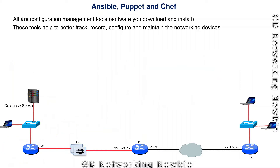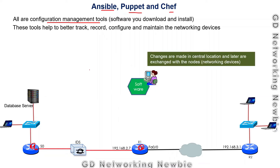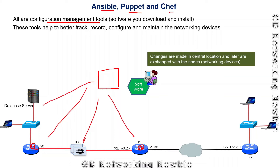Configuration management tools were introduced to solve these problems. We install the configuration management software on a central computer, and from that central location we configure all the networking devices using that tool — whether it is Ansible, Puppet, or Chef. We write the configuration instructions centrally and then push those configurations to the networking devices, instead of going to each device individually.